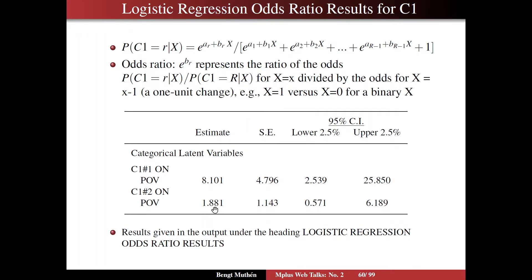Likewise, we have class 2, influenced by poverty. That odds ratio is 1.88 whereas that one is not significant because it spans 1, the confidence interval spans 1. And you find these results in the output under the heading logistic regression odds ratio results.